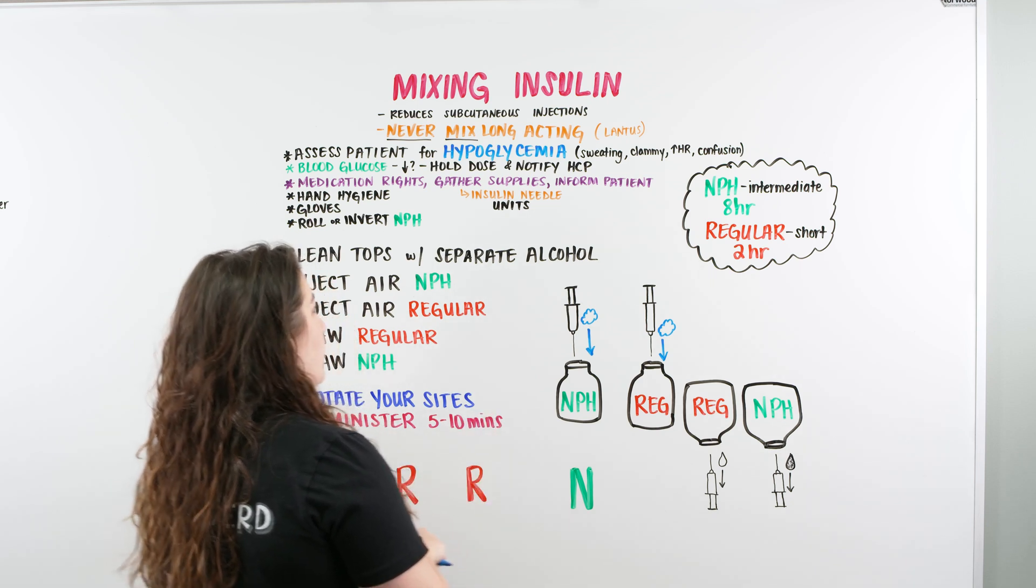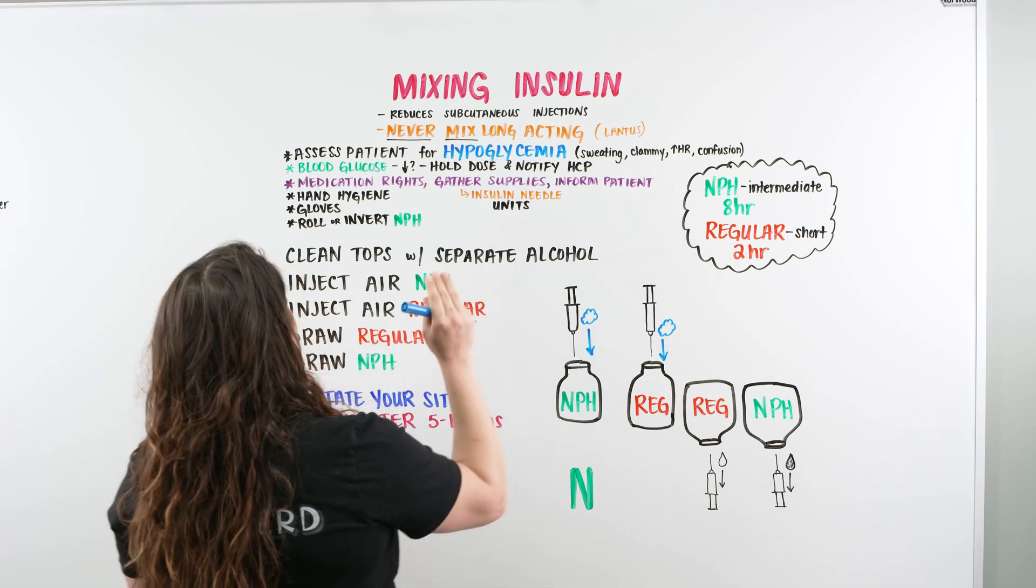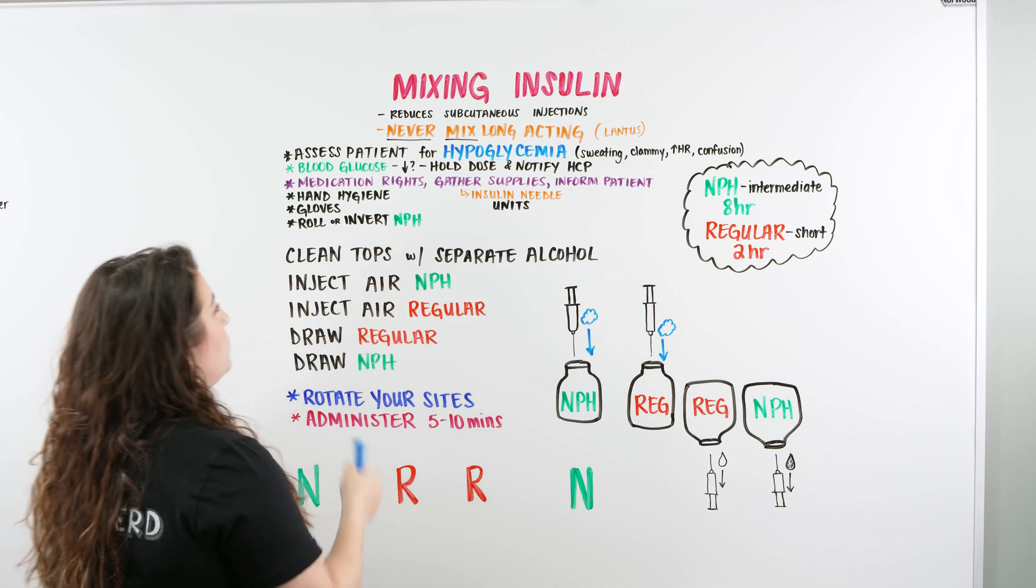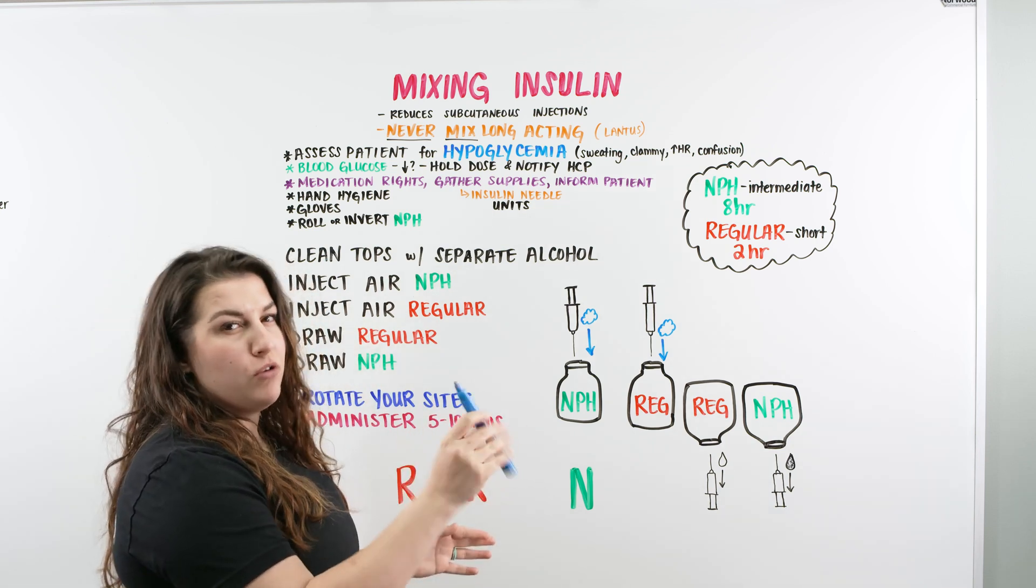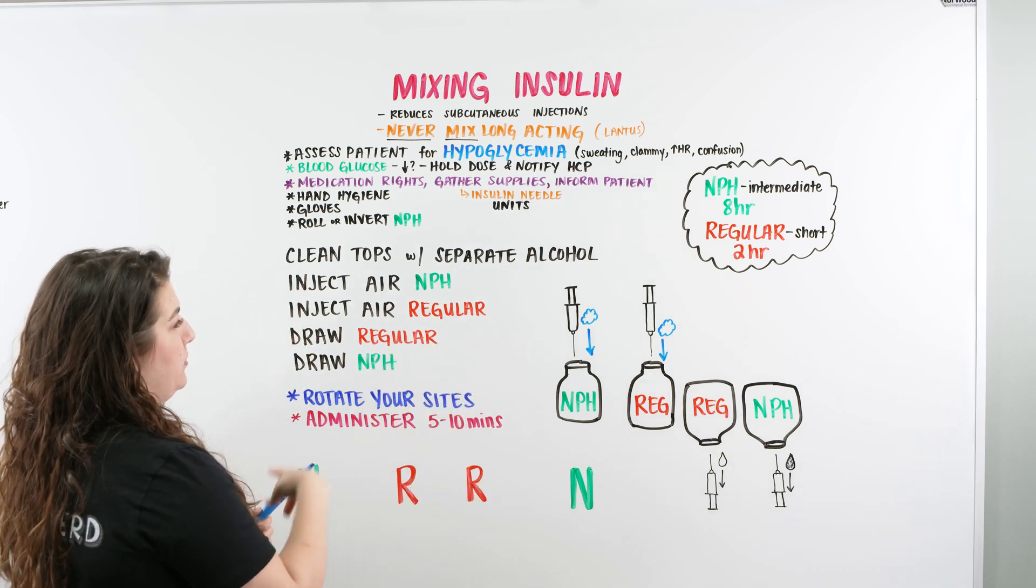You want to make sure you inform the patient of what's going on. Tell them you're going to be giving them their insulin. You're going to perform your hand hygiene, put on gloves. And then once you have your NPH, you can either roll it between your hands or you can invert it. You never want to shake it, because when you shake it, it can create little air bubbles that you can draw up into your syringe.